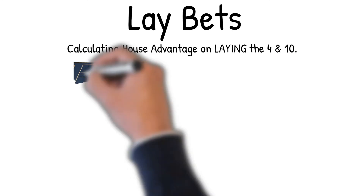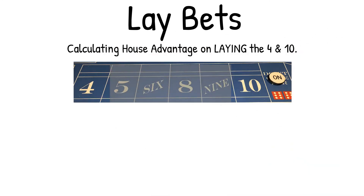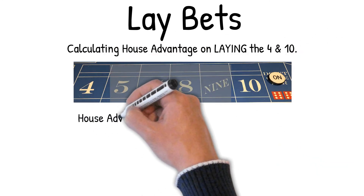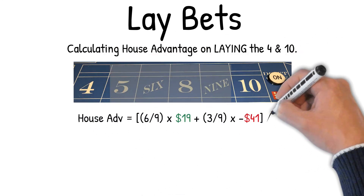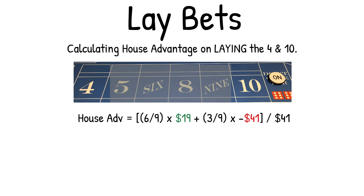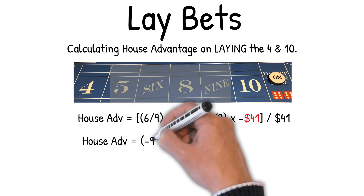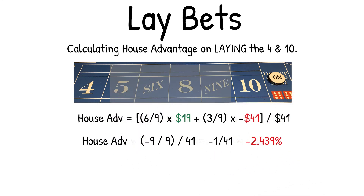Calculating house advantage on laying the four and ten. House advantage equals: 6/9 × $19 + 3/9 × (−$41), over $41. This equals (−9/9) / 41, which equals −1/41, which equals −2.439% house advantage.